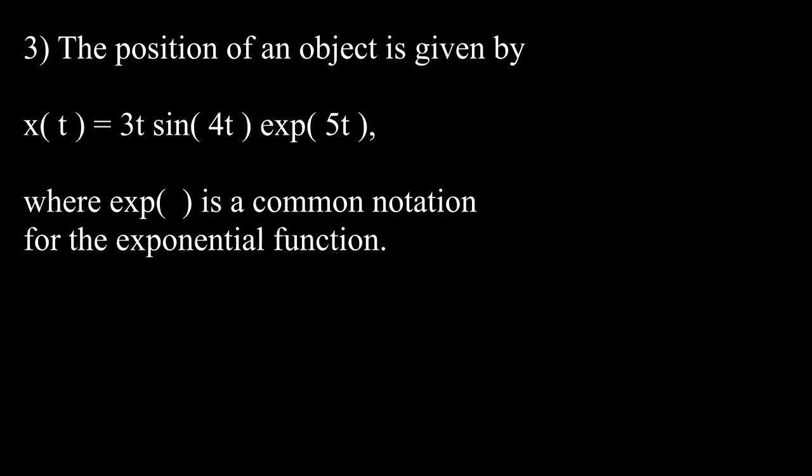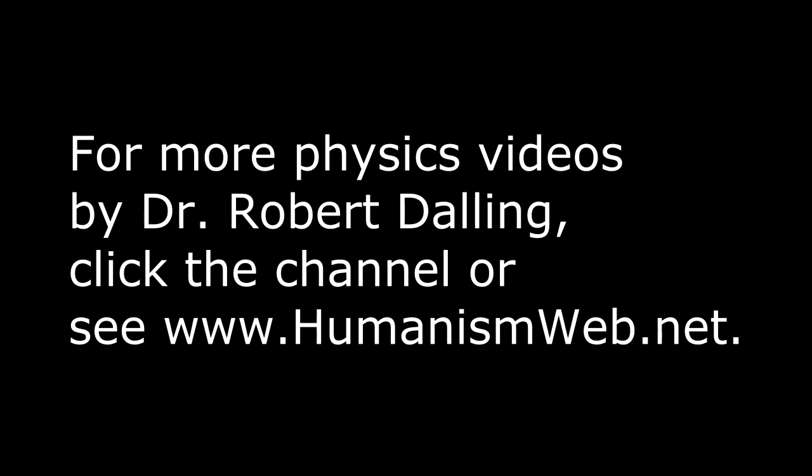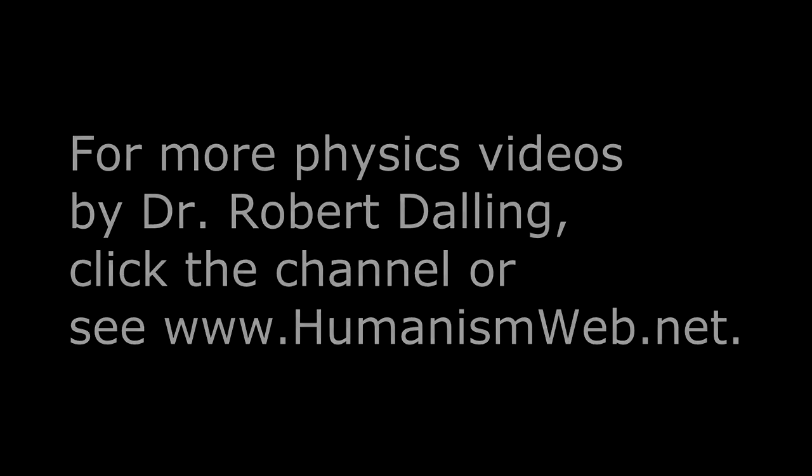Question 3. The position of an object is given by x(t) equals 3t times the sine of 4t times e to the 5t, where exp is a common notation for the exponential function. Using the triple product rule, we get v(t) is 3 sine of 4t plus 12t cosine of 4t plus 15t sine of 4t times the exponential e to the 5t.